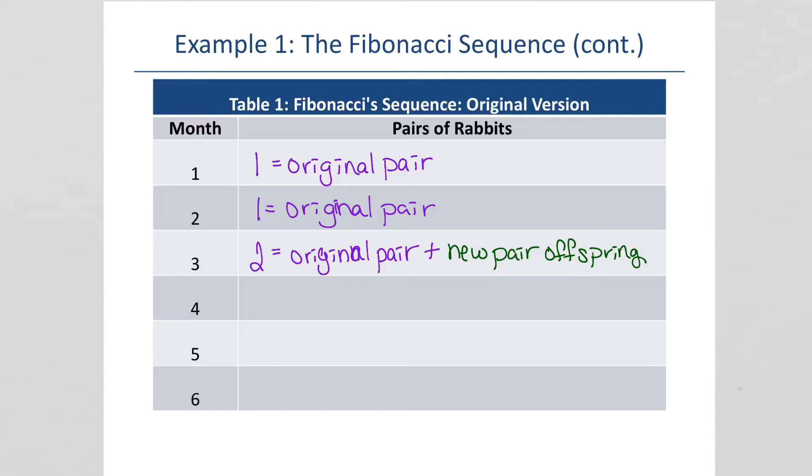The next month, we've got the original pair, we'll call it OP. Then, we've got the new pair from the previous month, new pair from month two. Plus, the original pair is going to make another pair because they can. So now, we have three pair of rabbits.